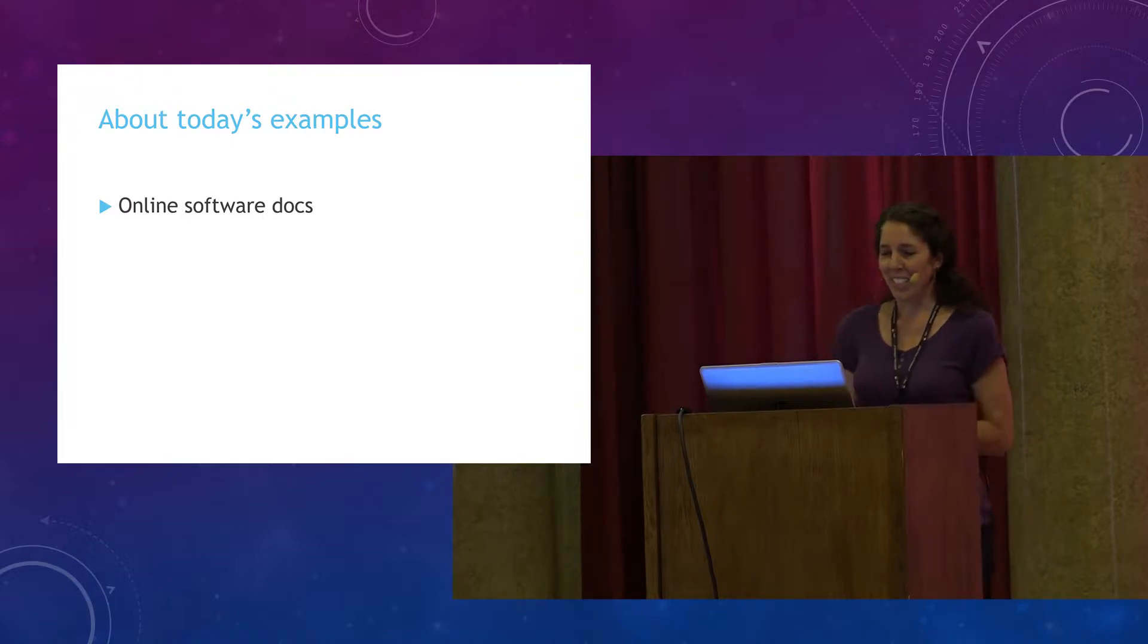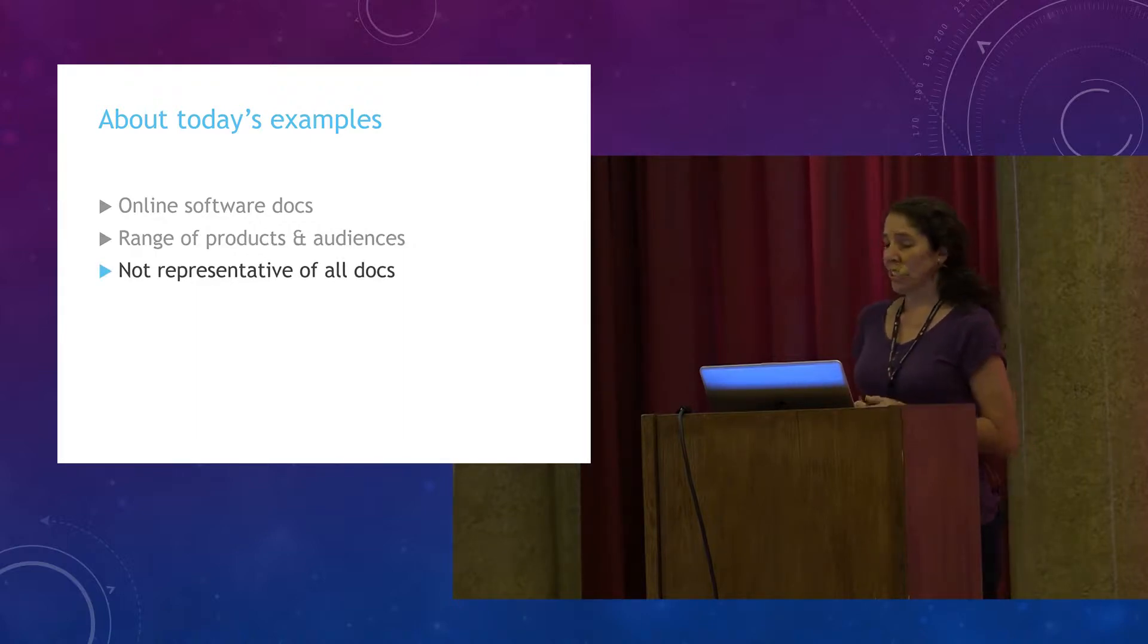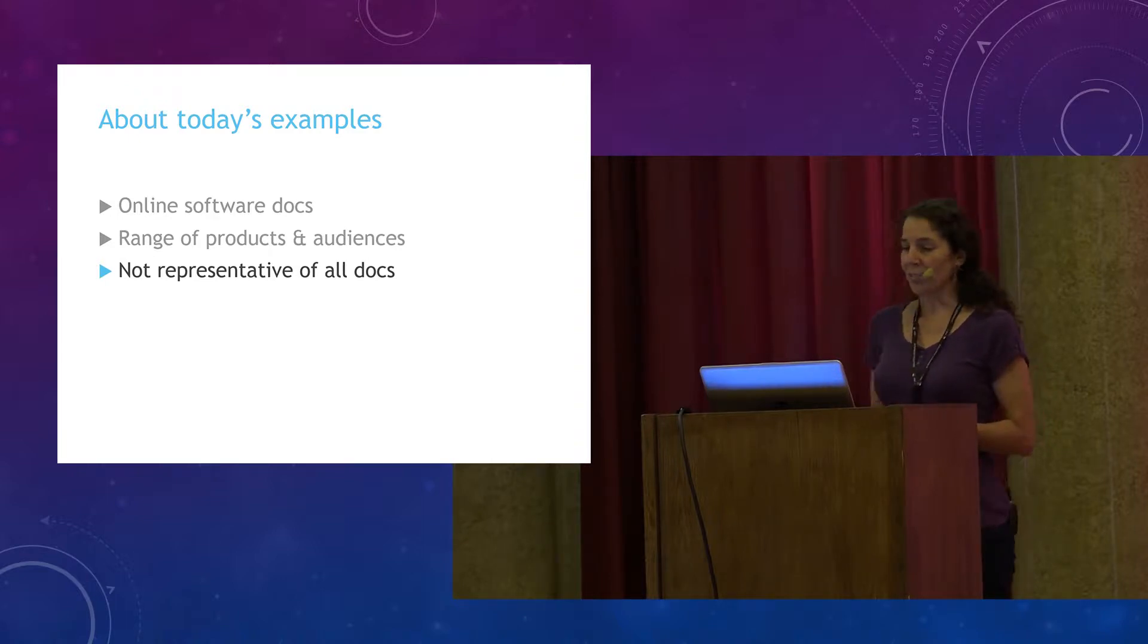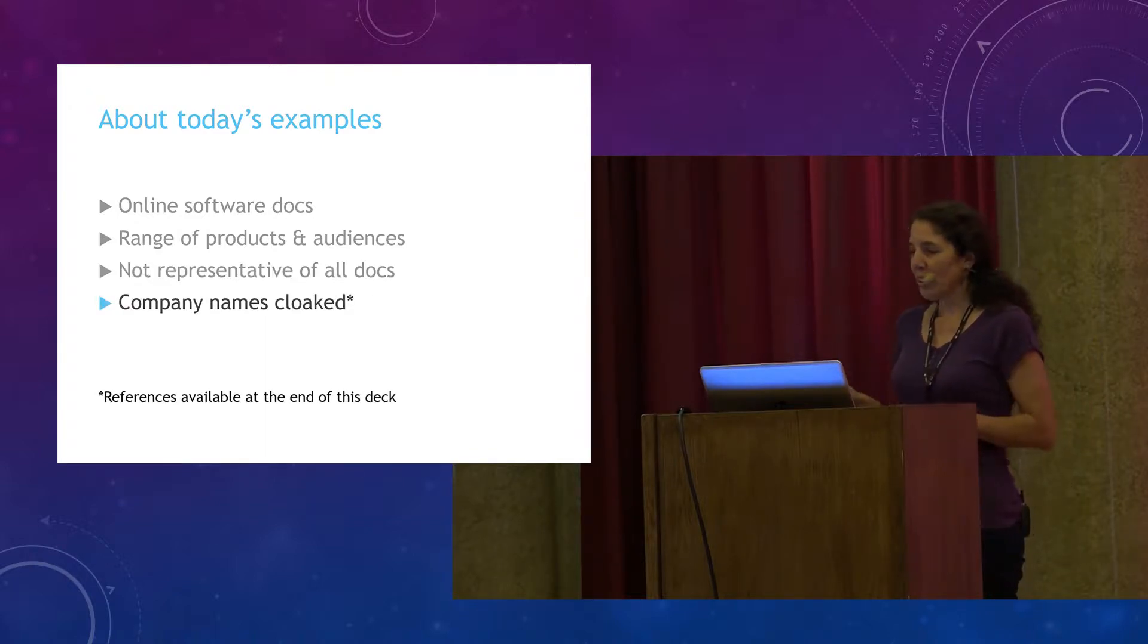Quick word about today's examples. They're mostly from online software documentation that's publicly available. The products are productivity and enterprise software, APIs, instant messaging apps. And the audiences were end users, administrators, and developers. Now the examples are not representative of all docs. They're not intended to be. Many documentarians follow traditional guidelines for language. I went looking for outliers. In these examples, I've cloaked the company names as best I could, providing you an idea of the webpage, but still not showing the company names so that we can focus on the content.